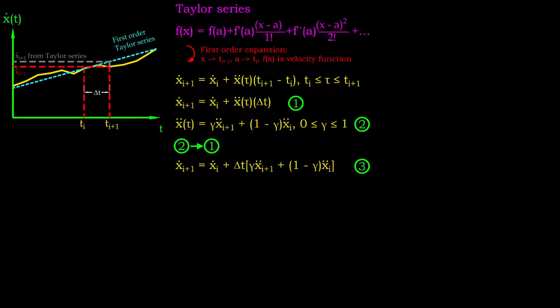Mathematically, we can expand any function through an equation that takes the form of Taylor series. Let's conduct the first order expansion for the velocity at instance i plus 1. To ensure the result is not merely an approximation, the acceleration should be a function of time tau, which lies between Ti and Ti plus 1.